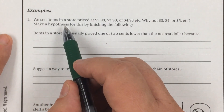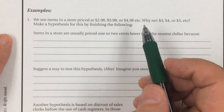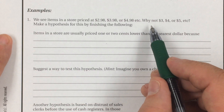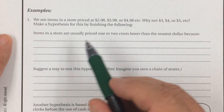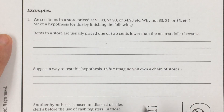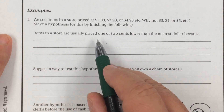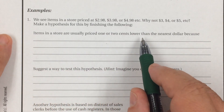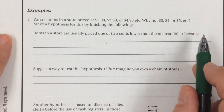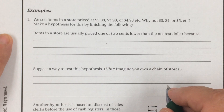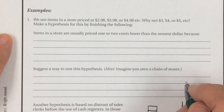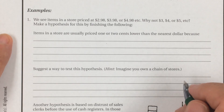Here's an example. We see that items in the store are priced at $2.98, $3.98, $4.98, and so on. Why not $3 or $4 or $5? Make a hypothesis for this by finishing the following: items in a store are usually priced one or two cents lower than the nearest dollar because... Stop the video and talk at your table about why people are more likely to buy something if it's $3.98 than if it's $4.